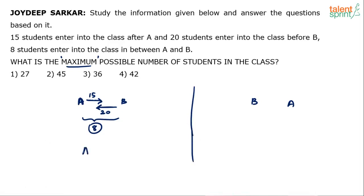Let's plot it. A comes first, then B, with 8 people between them. After A, 15 people entered the class. Those 15 are: 8 persons between A and B, the 9th person is B, and then 6 more persons till the end of the class.